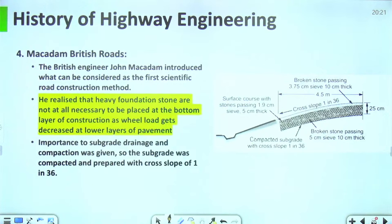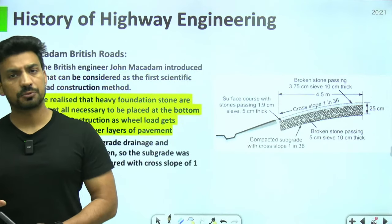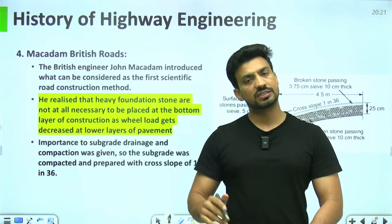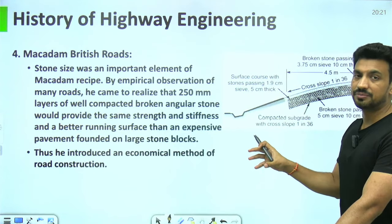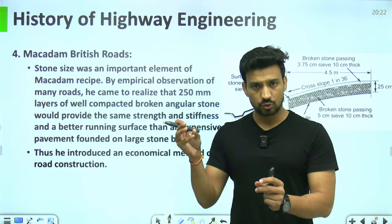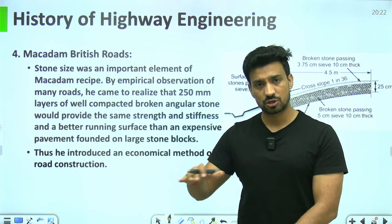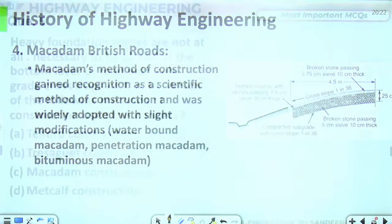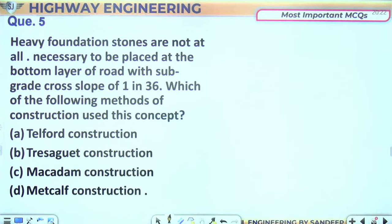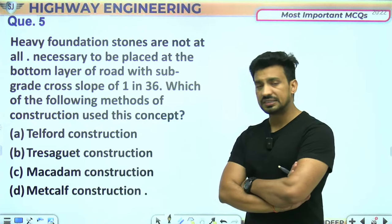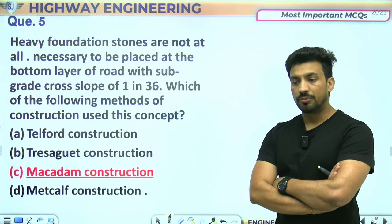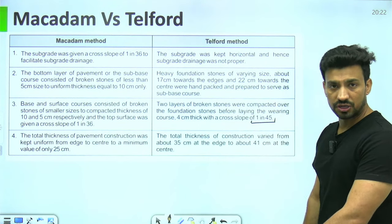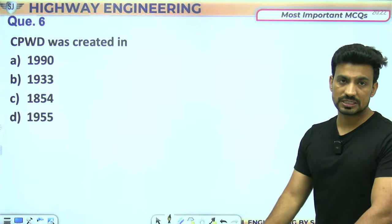Macadam ने सबसे पहले बताया कि heavy stones नीचे provide करने की जरूरत नहीं है — stress ऊपर ज्यादा रहता है और नीचे जाते-जाते कम हो जाता है। Macadam ने water bound macadam की recipe दी: stone के बीच stone dust भर दीजिए और water apply करके compact कर दीजिए। Macadam के अनुसार subgrade cross slope 1 in 36 थी। Telford ने 1 in 45 बताया था, Macadam ने 1 in 36।